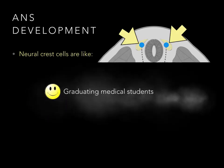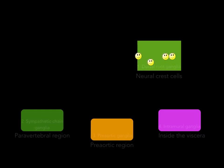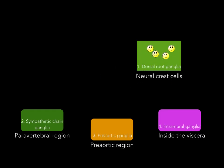Neural crest cells are like graduating medical students. Some students stay right at the University of Utah and become internal medicine residents. Some migrate to NYU for general surgery, some to UCLA for family medicine, some to ASU for dermatology. Similarly, some neural crest cells stay right where they're located and become dorsal root ganglia. Some migrate out to the paravertebral region and become sympathetic chain ganglia. Some migrate out in front of the aorta and become pre-aortic ganglia. And some migrate into the wall of the organs themselves and become intramural ganglia.